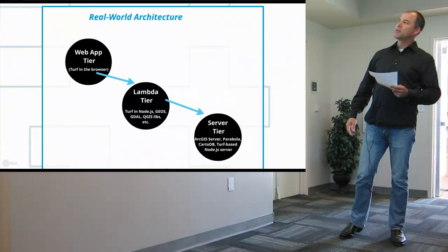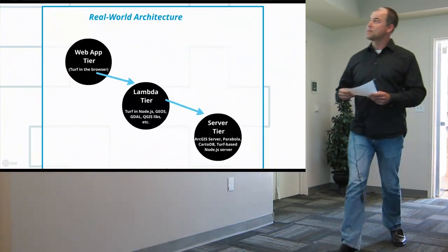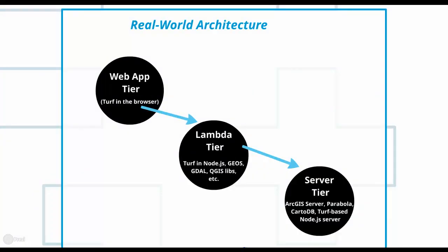If the first tier can't handle it, it cascades down to the second tier and so on. In this way, we keep execution as close to the point of consumption as possible for speed and simplicity. In the real world, it might look like this: in your web browser you can run Turf to do very basic GIS analysis. If it can't handle things, it cascades on to AWS Lambda — maybe running GEOS or QGIS libraries — and then if that tier can't handle it, on to the server tier running a traditional geoprocessing server.